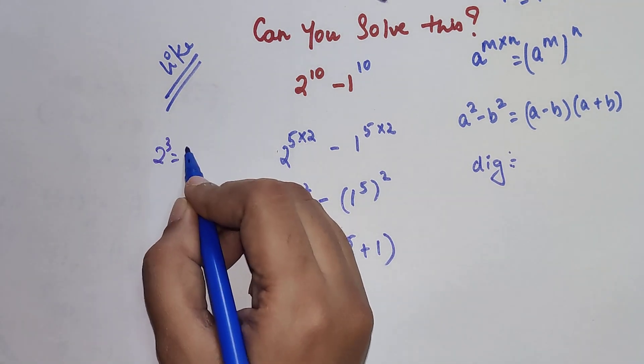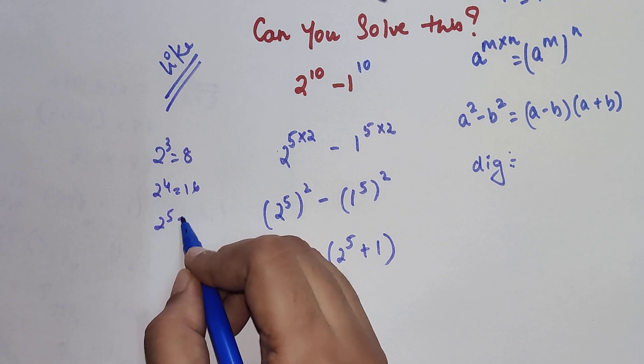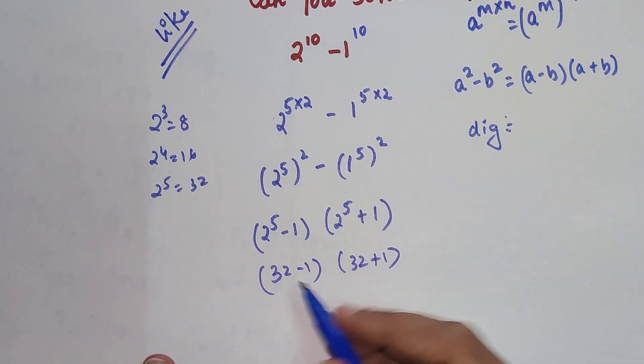Now we know that 2 cube is 8, 2 raised to 4 is 16, 2 raised to 5 will be 32. So 2 raised to 5 is 32 minus 1, 32 plus 1, so that gets you 31 times 33.